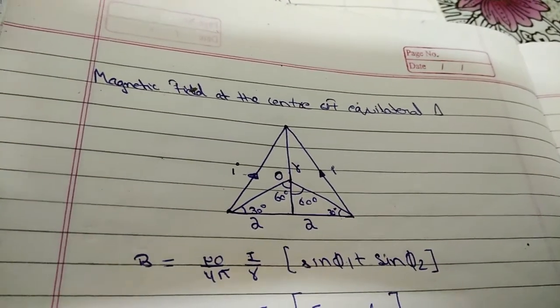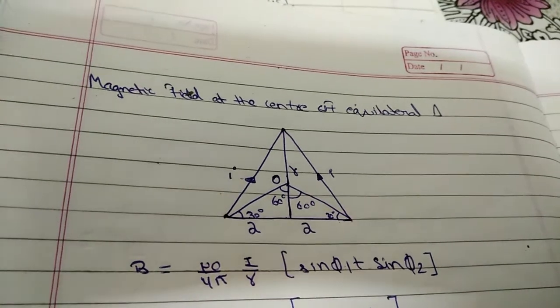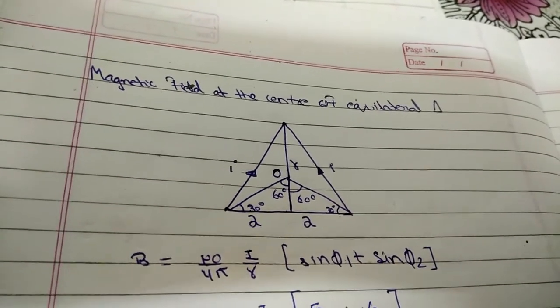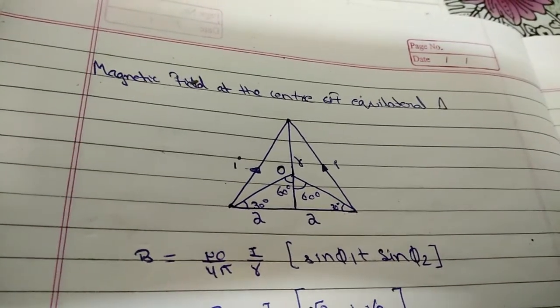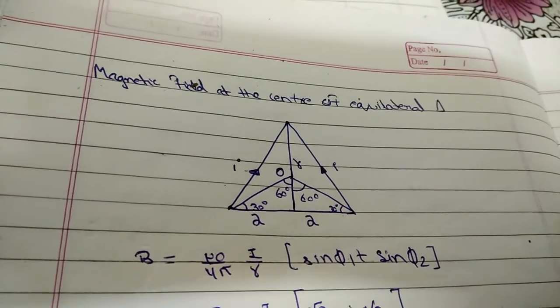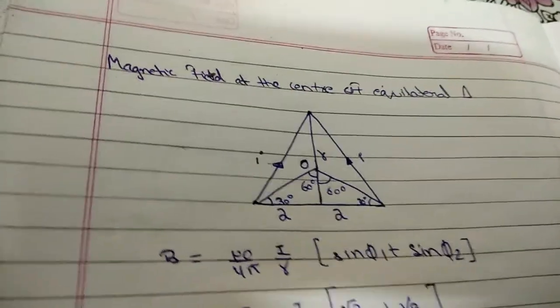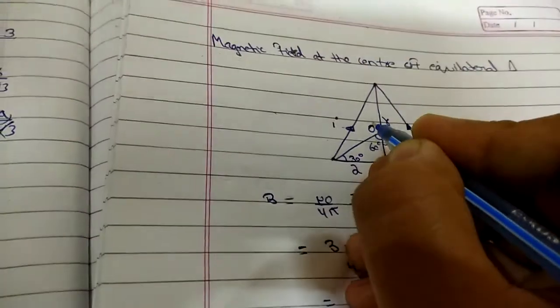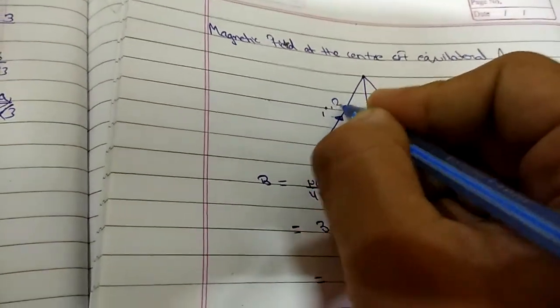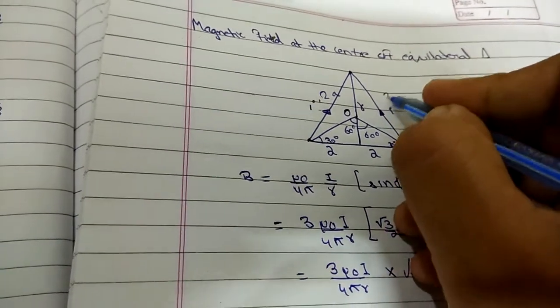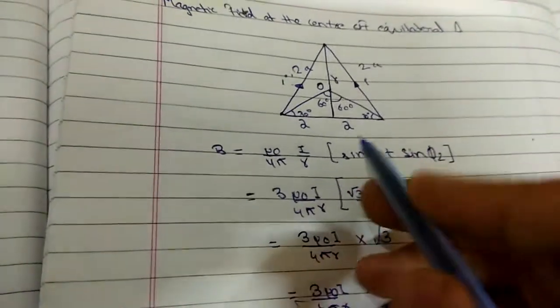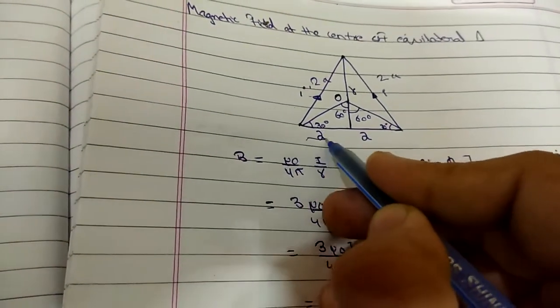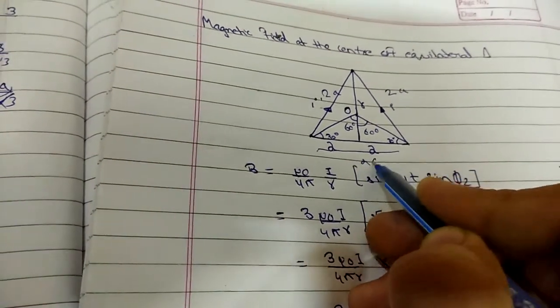The angles of the equilateral triangle have been mentioned here and each side is 2a. This side is 2a, this is also 2a, so the full side is 2a.